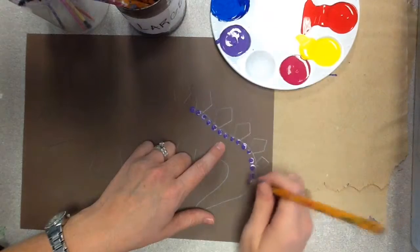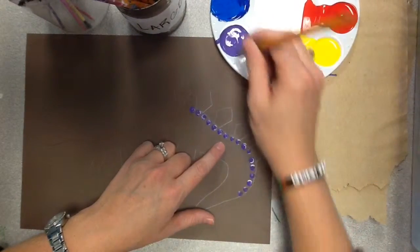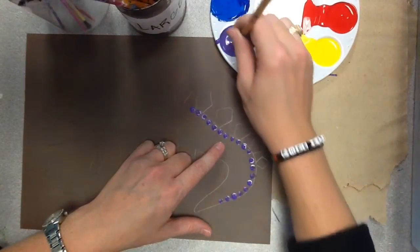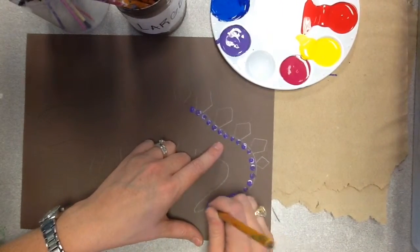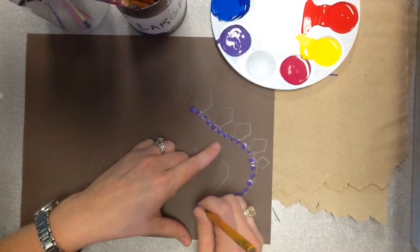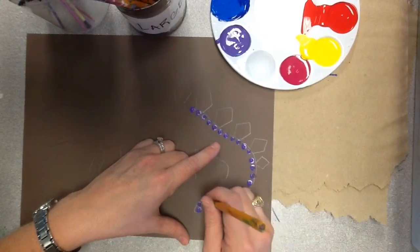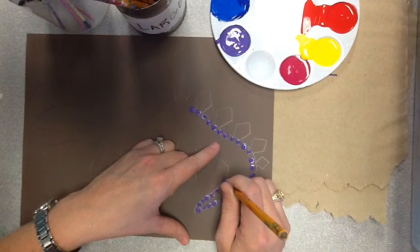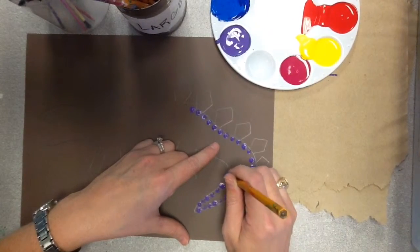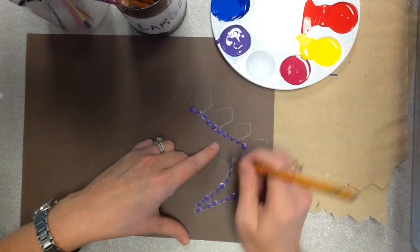When you're doing this, you want to make sure that your pencil is straight up and down, or whatever tool you're using, so that the dots are all about the same size. And our dots need to be close to each other, but try not to make them touch. If they do touch, it's not a big deal, but we want to try not to. Because most dot paintings, the dots are separate from each other.